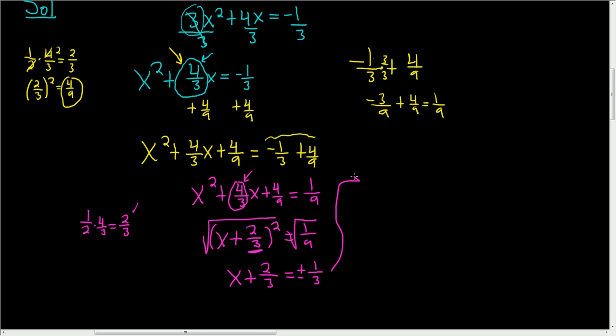To finish, we subtract the 2 thirds. So minus 2 thirds, minus 2 thirds. So x is equal to minus 2 thirds, plus or minus 1 third. And we have two cases. We have the plus and the minus.